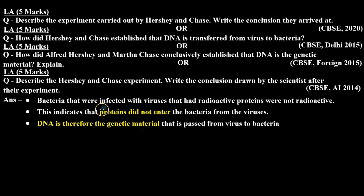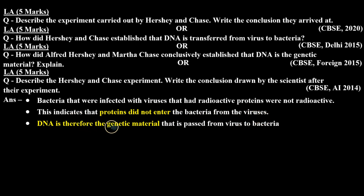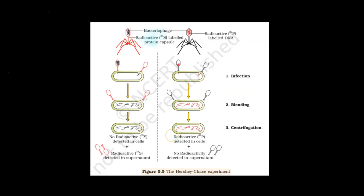Bacteria that were infected with viruses that had radioactive proteins were not radioactive. This indicates that proteins did not enter the bacteria from the viruses. DNA is therefore the genetic material that is passed from virus to bacteria. This is the diagram of the Hershey and Chase experiment. I hope this question is clear to you. Thank you.